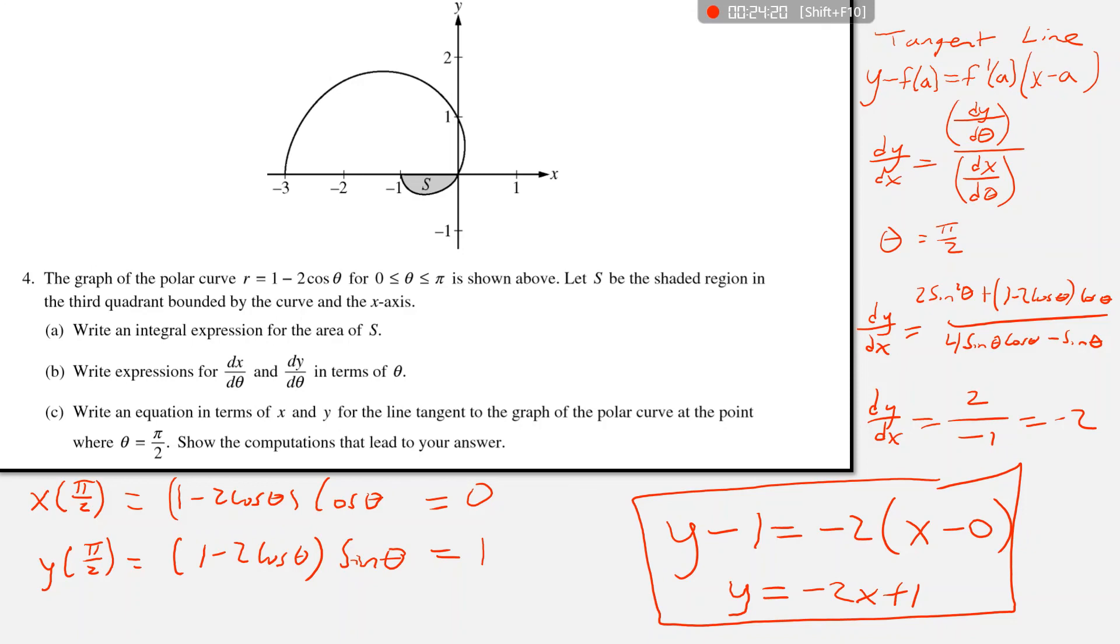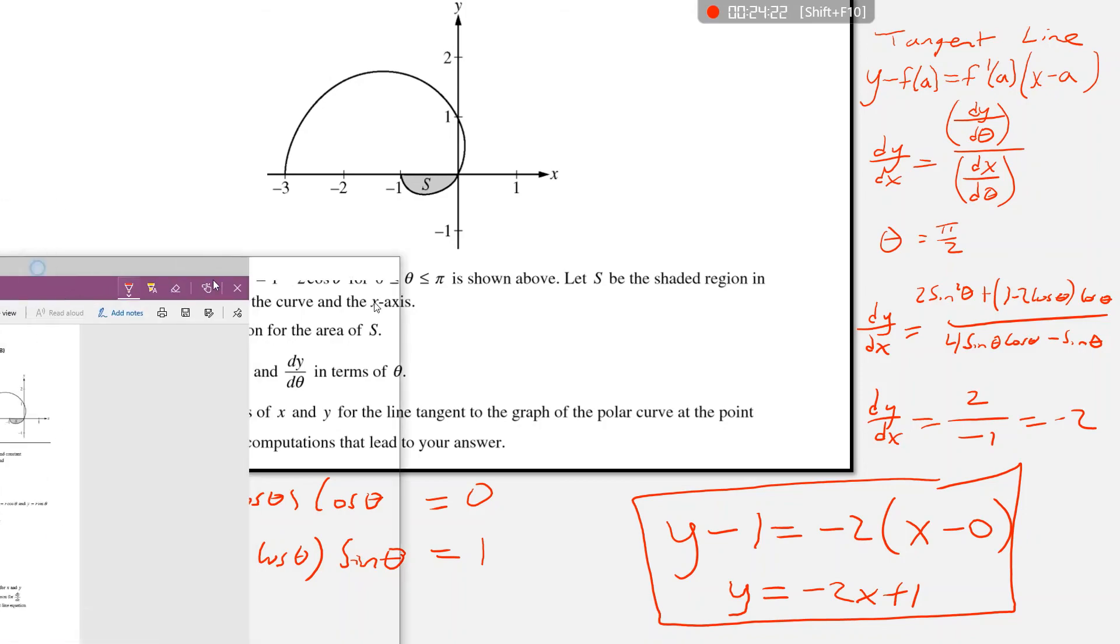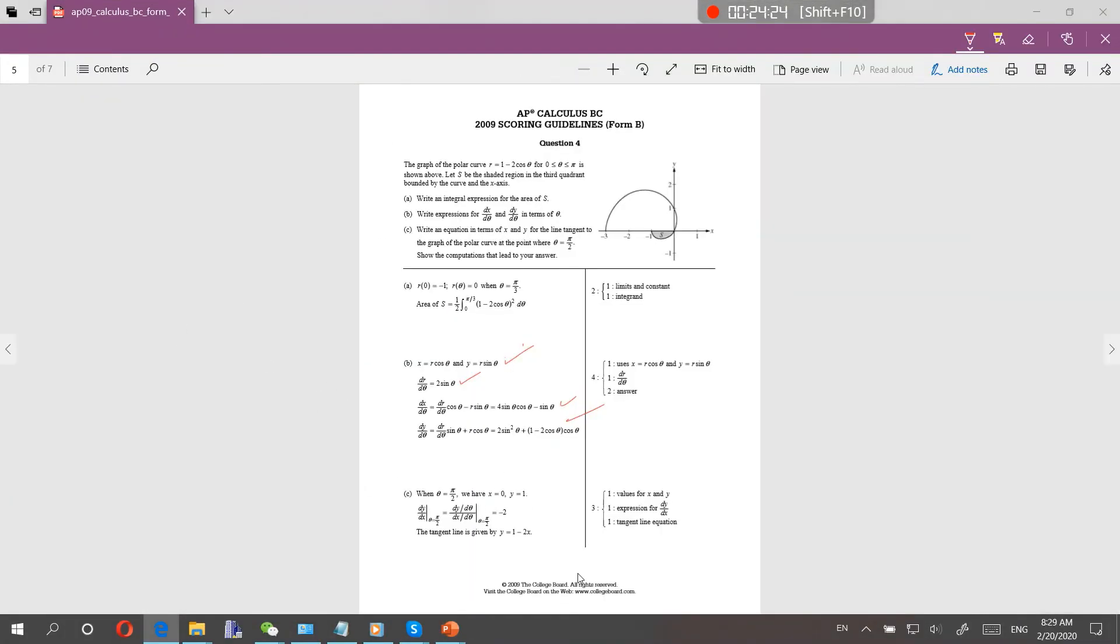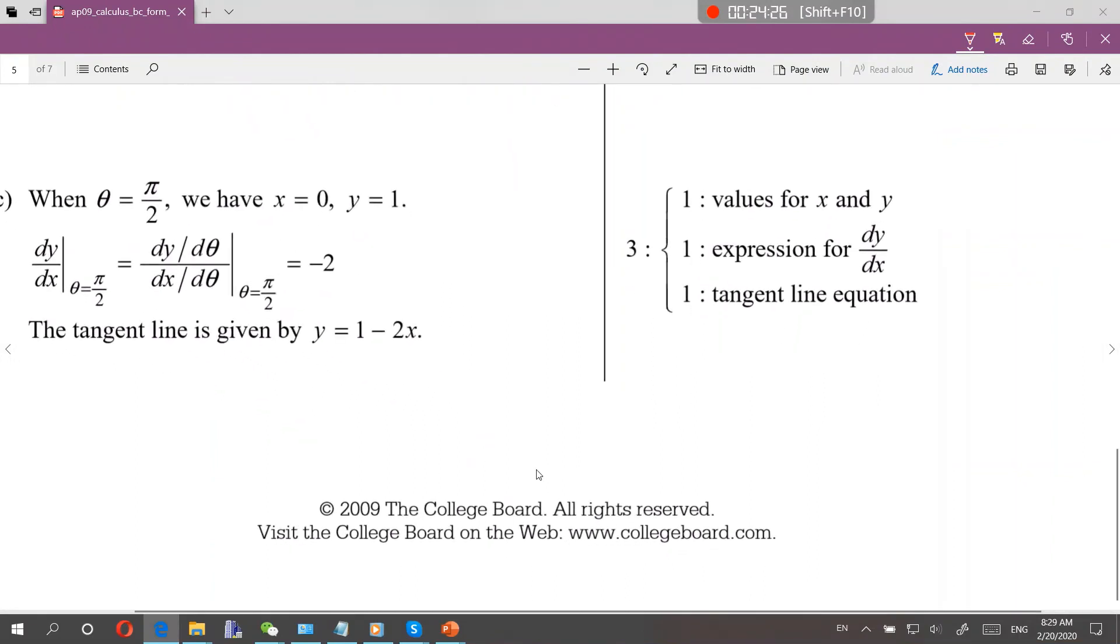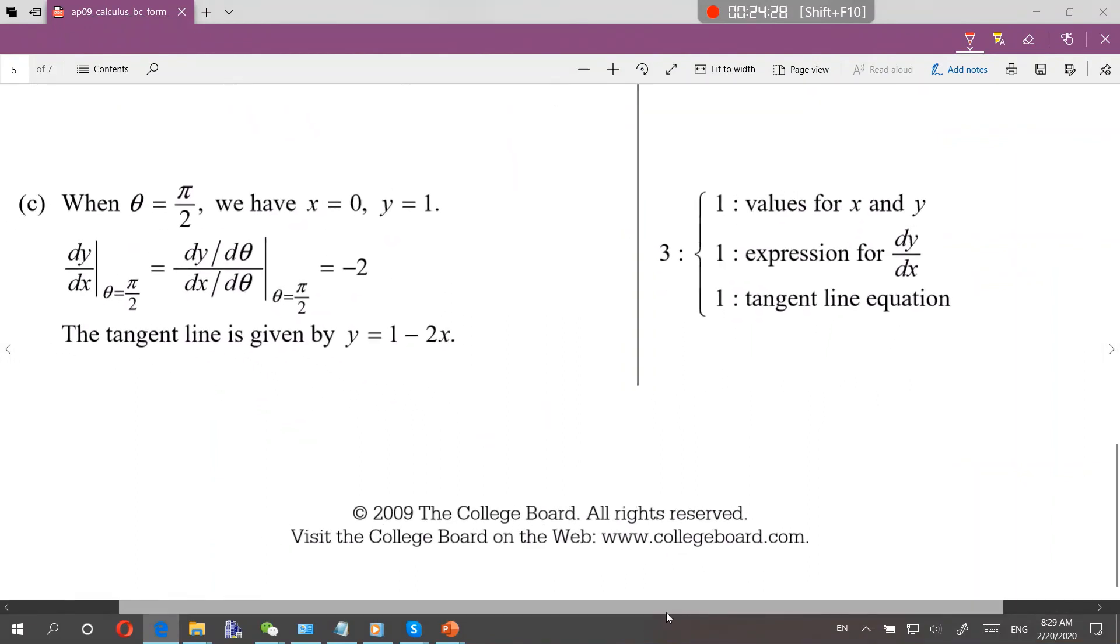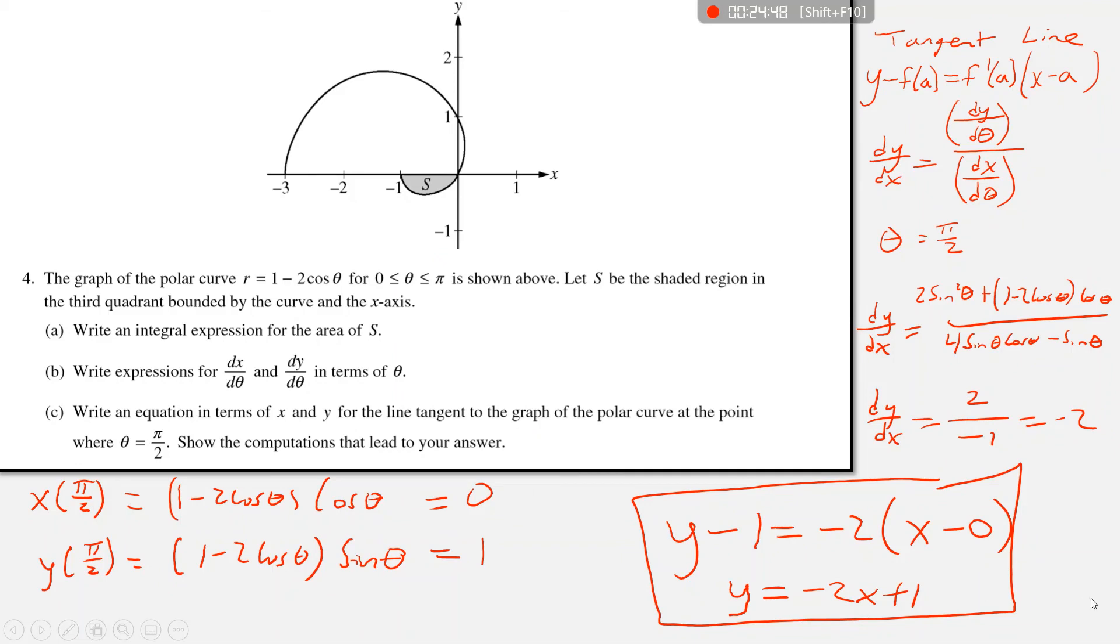So we get... Let's see how we did. Okay. Values for x and y, zero and one. Okay. We got that. Expression for dy over dx is dy over d theta over dx over d theta. At theta is pi over two is negative two. Looks good. And tangent line equation, y equals one minus two x. Yes. Let's see. All right. Awesome.